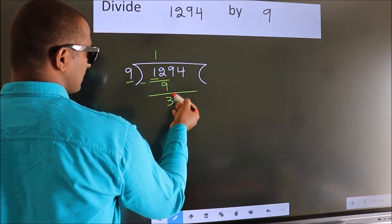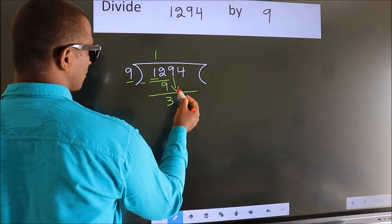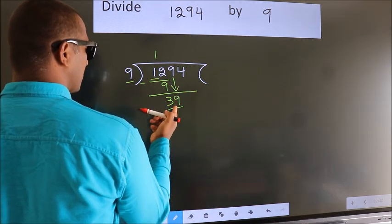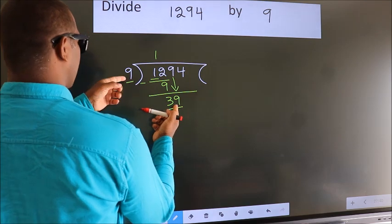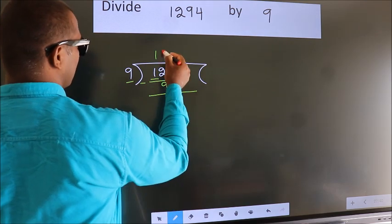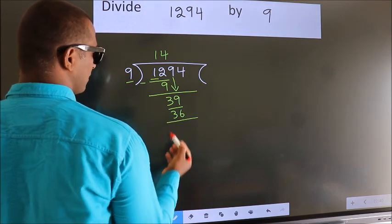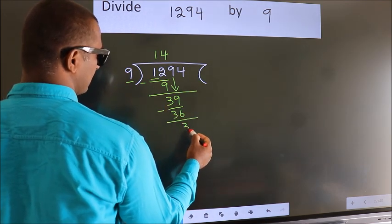After this, bring down the next number. So, 9 down. So, 39. A number close to 39 in the 9 table is 9 times 4, which is 36. Now we subtract, we get 3.